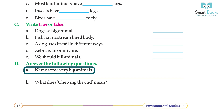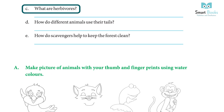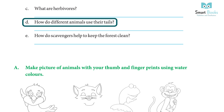Answer the following questions. A) Name some very big animals — rhinoceros, lion, tiger, hippopotamus. B) What does chewing the cud mean? Animals swallow their food without chewing it; when they rest, they bring the food back into their mouth and chew it with their grinding teeth — this is called chewing the cud. C) What are herbivores? Animals like cows, horses, elephants, and goats that eat plants and their products are called herbivores.